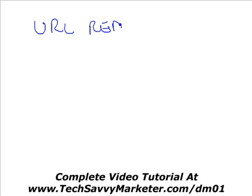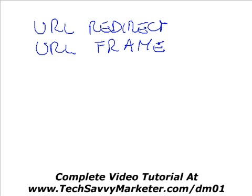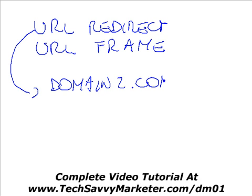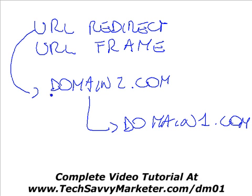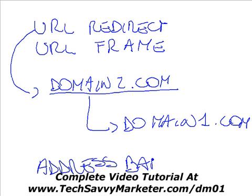There are two more things that you can do just by buying a domain. The first one is called URL Redirect and the second one is called URL Frame. What is the difference between the two? Basically, if you choose URL Redirect, you will do a redirect from domain2.com to domain1.com. So someone types in domain2.com and they're going to be redirected to domain1.com, and they're going to see domain1.com in their address bar — in Internet Explorer or Firefox.